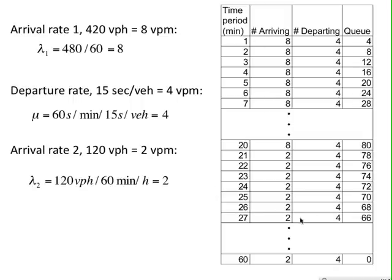Okay, so we could put these into a table showing time period from 1 to 60 in the first hour. The arrival rates during each minute in the first 20 minutes is 8 vehicles per minute. The departure rate for the whole hour is uniform, remember, and that's 4 vehicles per minute.